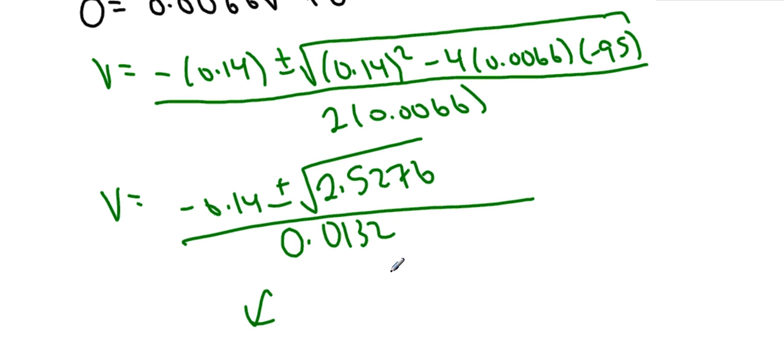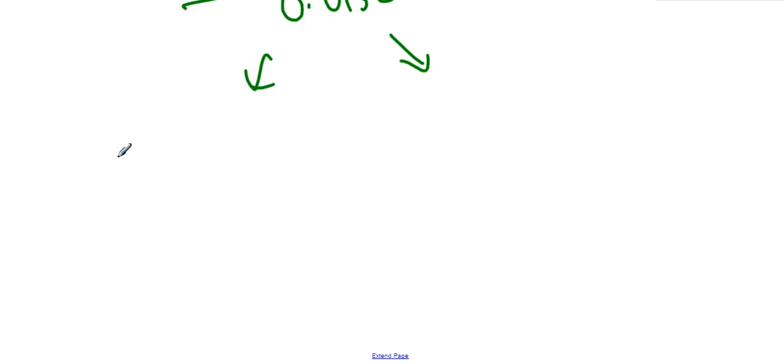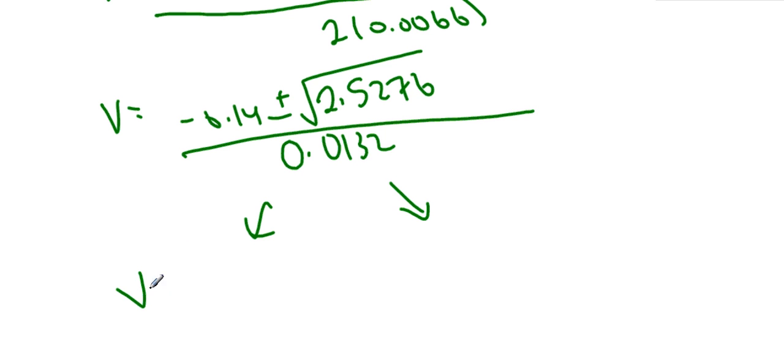So let's split into our two distinct answers. Oops, so extend page. For one answer - hold on, I'm trying to hold my calculator and my tablet, it's not working so great - let me fix this. So I get a velocity v equals negative 0.14 plus 1.6.